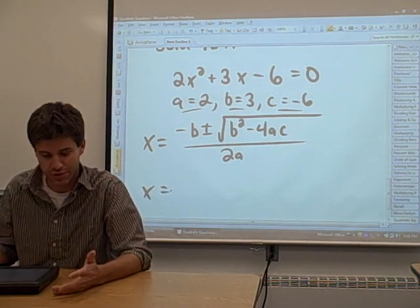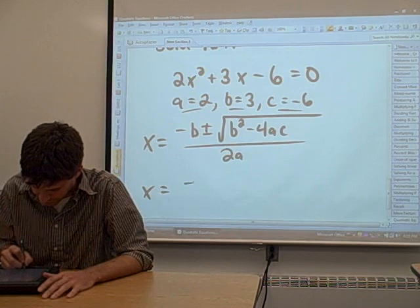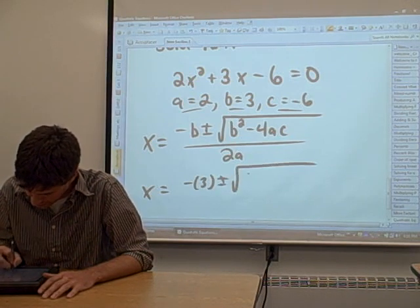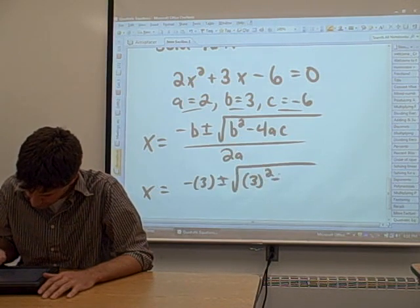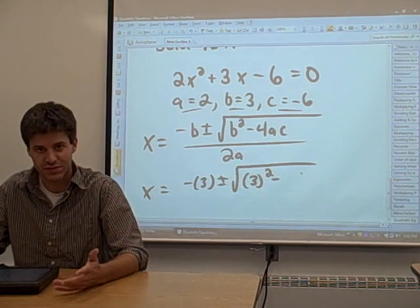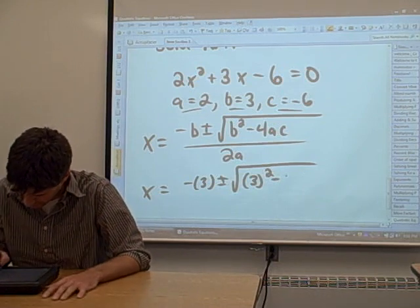Everywhere you see a b, you're going to plug in 3. Where you see an a, you plug in 2. Where you see a c, you plug in negative 6.